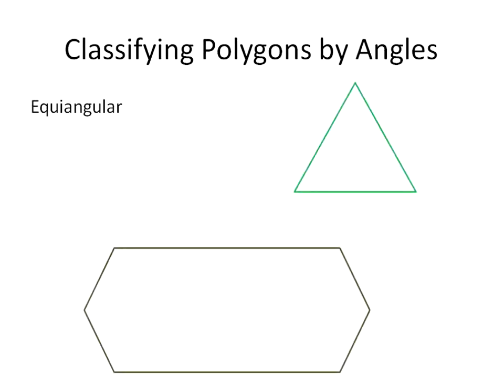An equiangular polygon is a polygon that has all equal angles. This triangle, for example, has three congruent angles — three angles that are exactly the same measurement — so we call it equiangular. This hexagon has side lengths that are clearly not the same, but it is still classified as equiangular because all six interior angles are a congruent measurement.